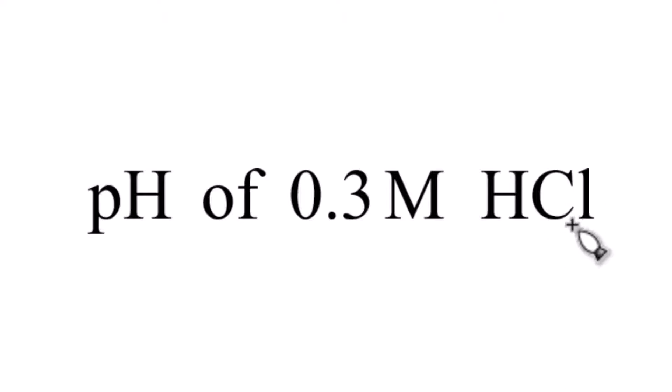And because it's a strong acid, it's going to dissociate completely into its ions. We'll get H plus and Cl minus.